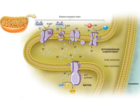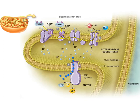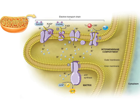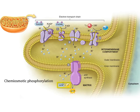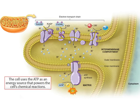Now focus your attention on the ATP synthase protein at the bottom of the figure. If you follow the black arrow through ATP synthase, you'll see that the hydrogen ions enter ATP synthase from the intermembrane compartment and move through it to the matrix by facilitated diffusion. Since the hydrogen ions are moving from a high concentration to a low concentration, they're going from a high energy state to a low energy state and are therefore releasing energy. In a process called chemiosmotic phosphorylation, ATP synthase uses this energy from the hydrogen ion gradient to add a phosphate to ADP, producing ATP. The cell uses the ATP as an energy source that powers the cell's chemical reactions.